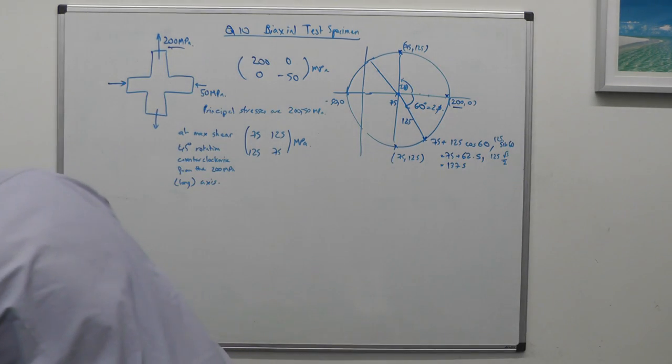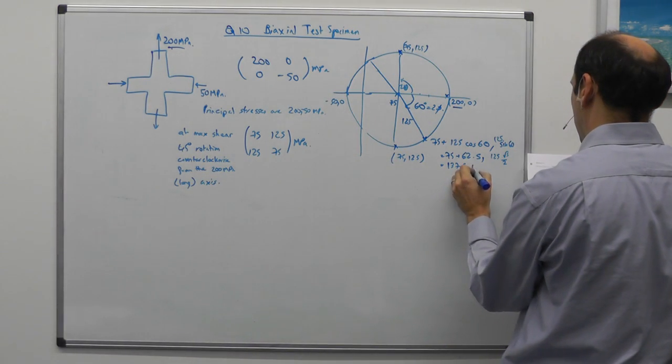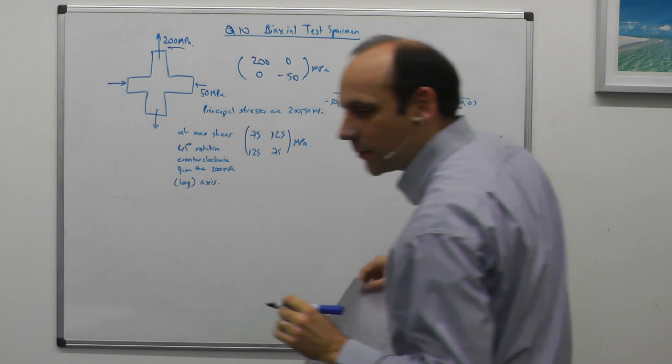And if I write that down, sin 60 is root 3 over 2 times 125. If you're interested, that's a shear stress of 108 megapascals.